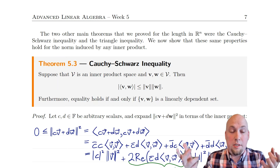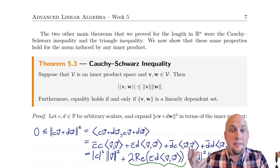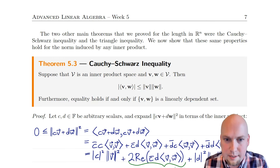You can think of this as the best relationship you can come up with between the inner product of two vectors and their lengths — every possible relationship between those quantities is characterized by this inequality. If I give you a particular inner product and a pair of vector lengths and ask whether you can find vectors with that inner product and those lengths, you just check whether the Cauchy-Schwarz inequality is satisfied. If it is, you can find such vectors; otherwise, you can't.